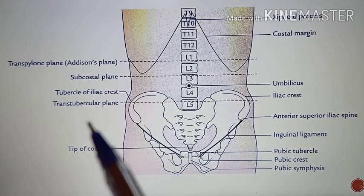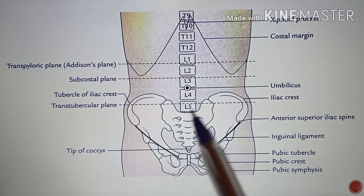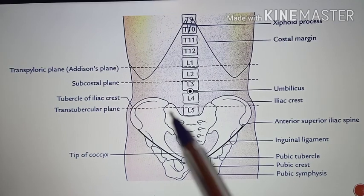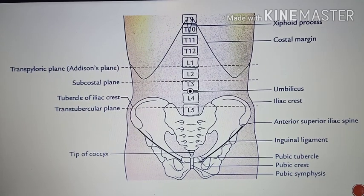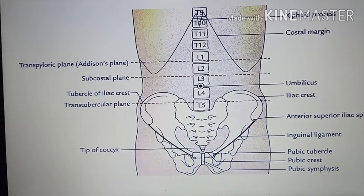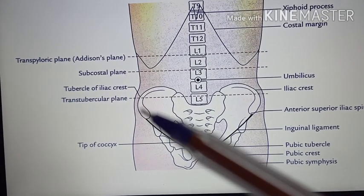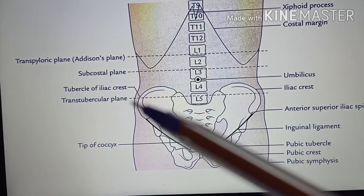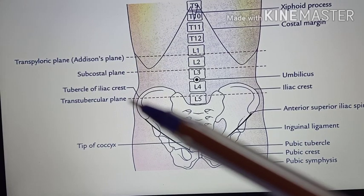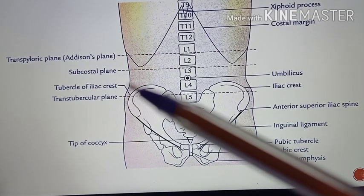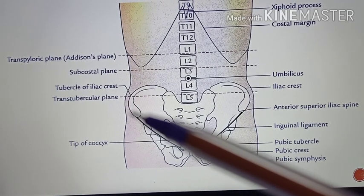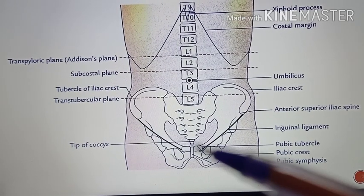Coming to the transtubercular plane — this is the inferior horizontal plane, called the transtubercular plane. It is drawn at the level of the tubercle of the iliac crest. Here this is the hip bone, this is the iliac crest, here you are having the anterior superior iliac spine, and here you will have the tubercle of the iliac crest, which is located around 5 cm posterior to the anterior superior iliac spine.